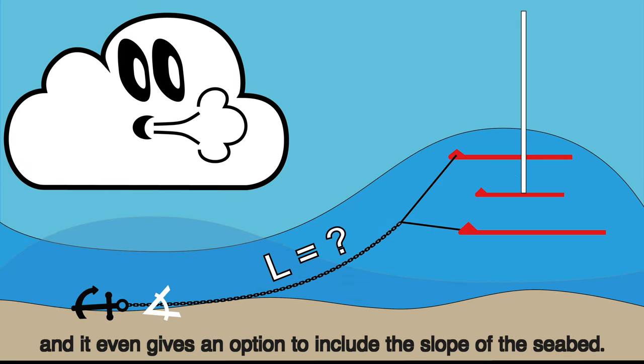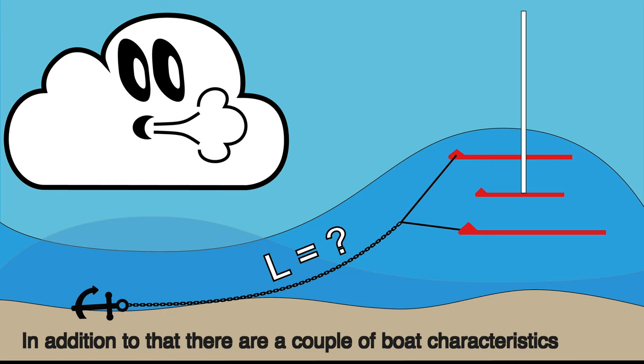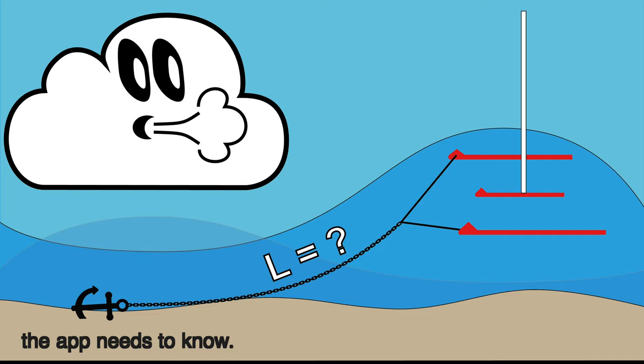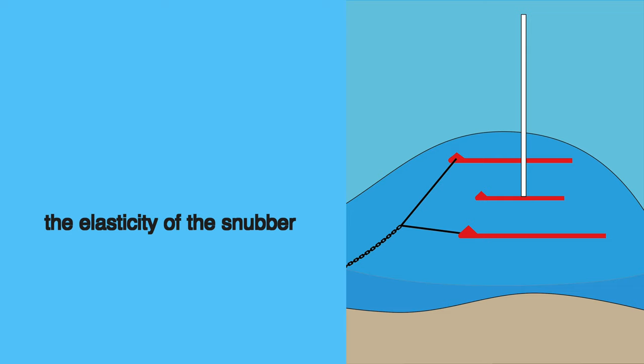and it even gives an option to include the slope of the seabed. In addition to that, there are a couple of boat characteristics the app needs to know. These are the chain thickness, the elasticity of the snubber,